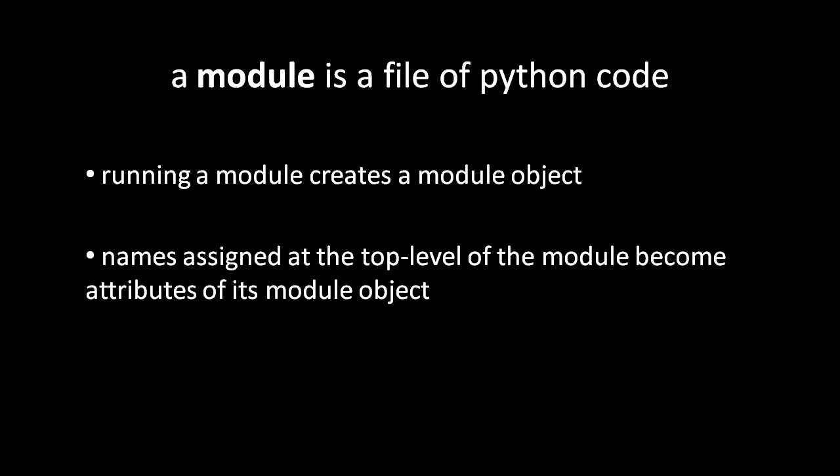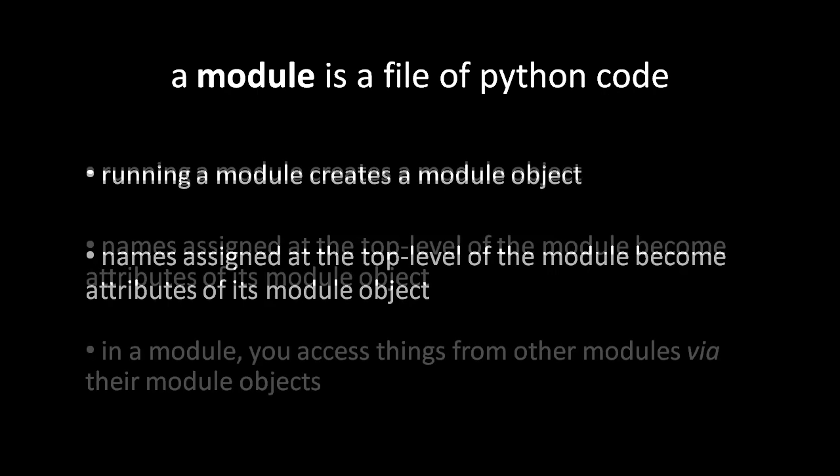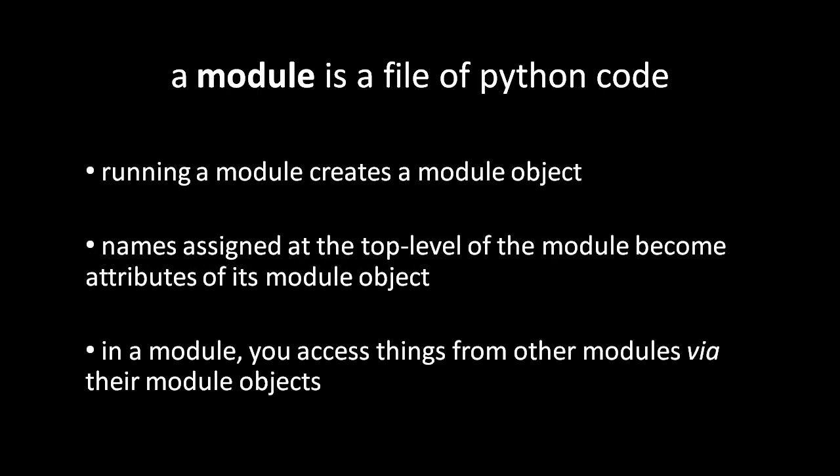So once a module finishes executing, we're left with this module object that contains attributes for everything that was assigned in that module. This is how you can have multiple modules tied together. Within one module, if we want to invoke, say, a function defined in another, we just need to access it as an attribute from the module object representing that other module.